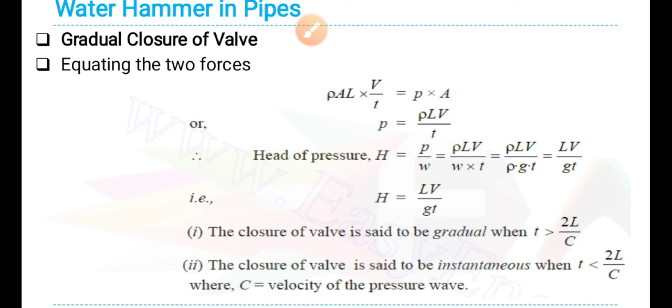I pointed out that we will come to know that 2L by C is the time, even after one or two classes we will come across this 2L by C. C is the celerity of pressure wave, L is the length of the pipeline, and T is the time required to close the valve.